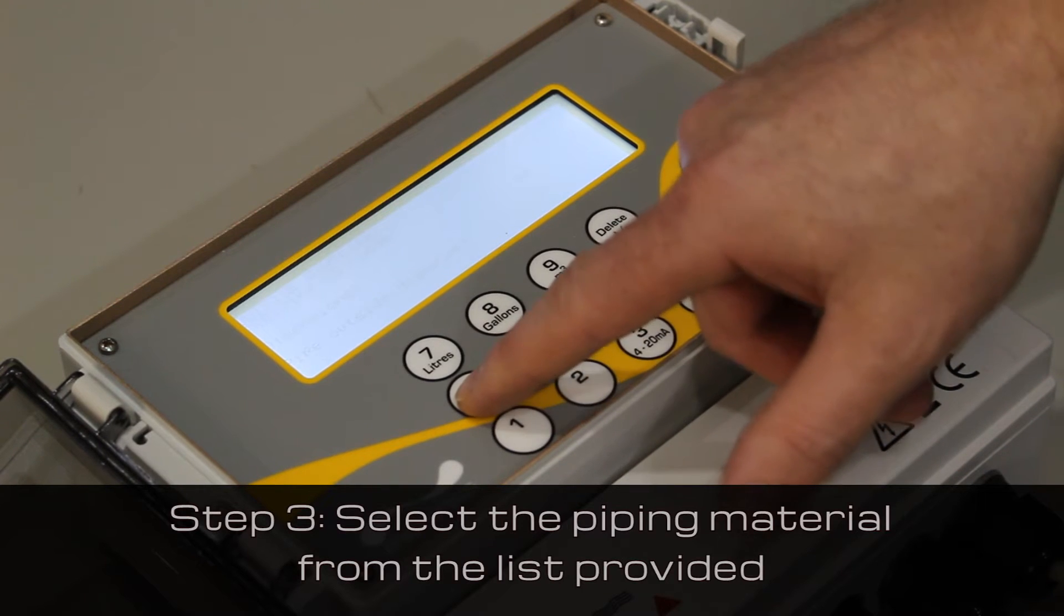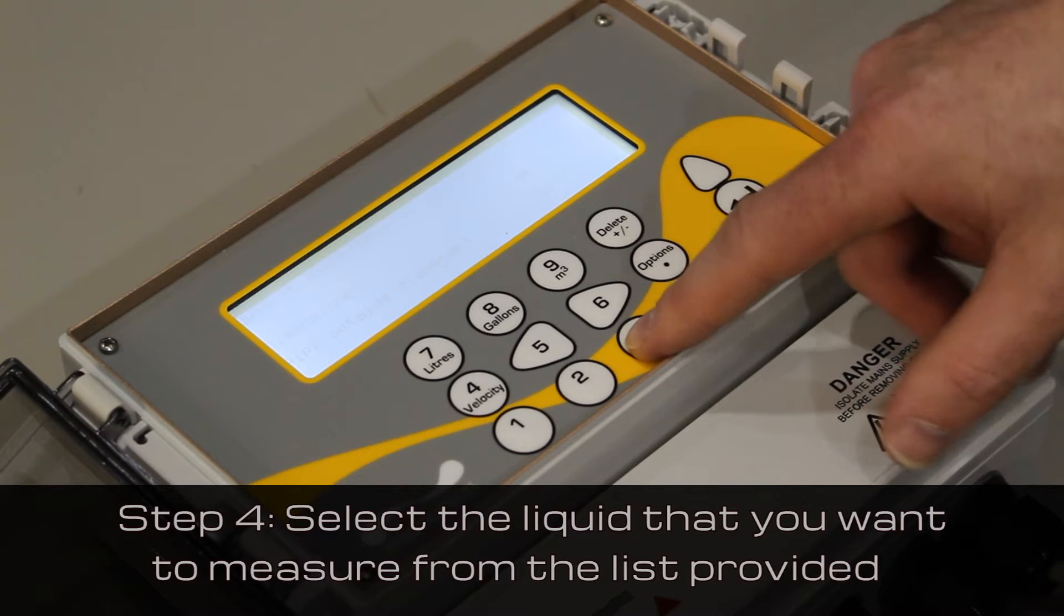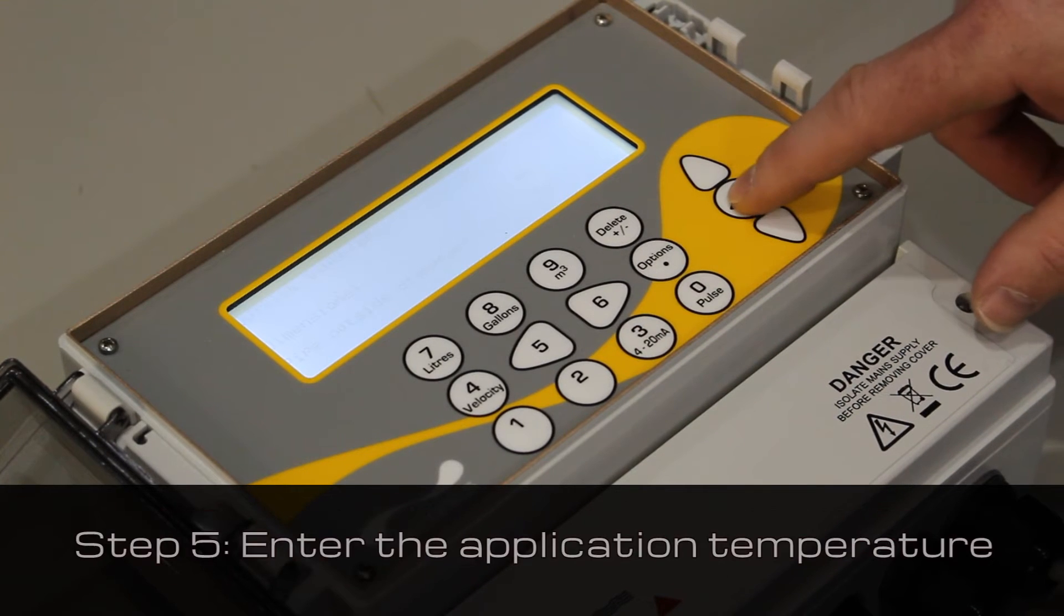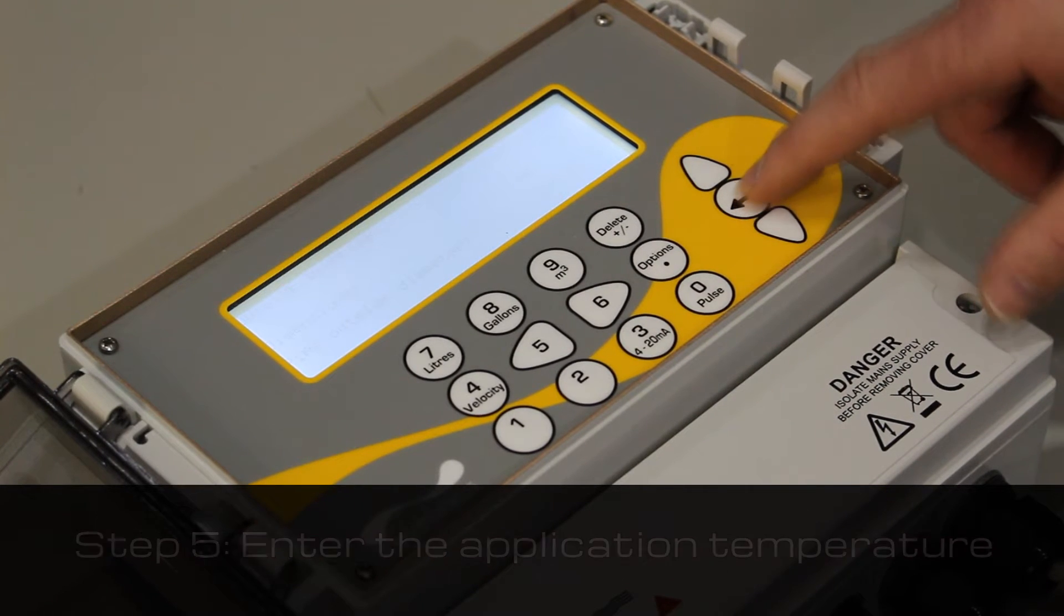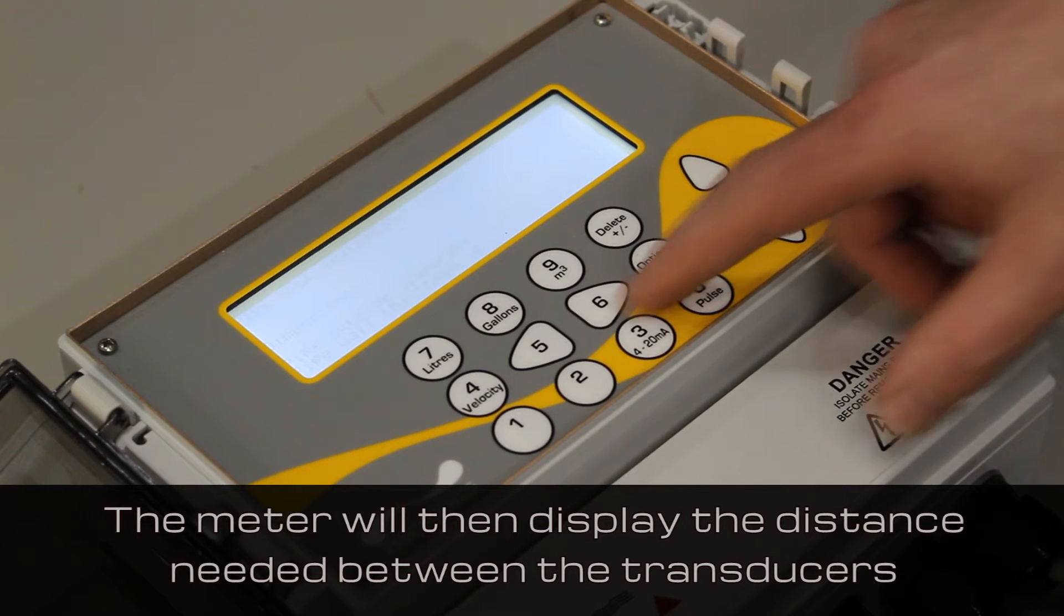Then select the piping material from the list provided. Next, select the liquid that you want to measure from the list provided. Enter the application temperature. The meter will then calculate the distance needed between the transducers and will display it on the screen.